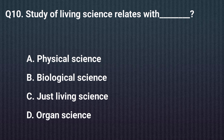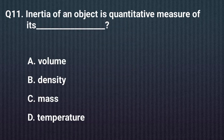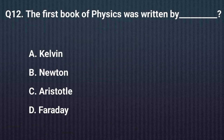Question eleven. Inertia of an object is a quantitative measure of its — the right answer is option C: Mass. Question twelve. The first book of physics was written by — the right answer is option C: Aristotle.